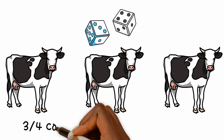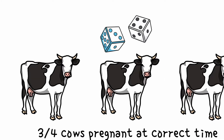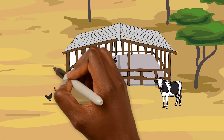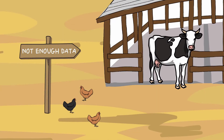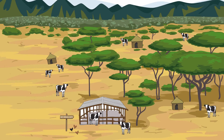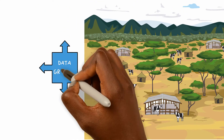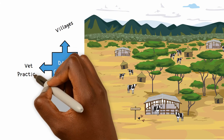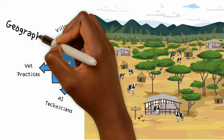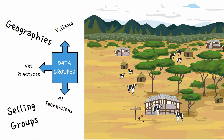On good farms, three-quarters of cows will become pregnant at the correct time. For smallholder farms there are too few animals to make inferences as the numbers are too small. However, in groups of animals it is possible to investigate possible reasons. Data from smallholder farms need to be grouped — into villages or vet practices, by bull or AI technician, or by geographies or selling groups with similar situations and practices.